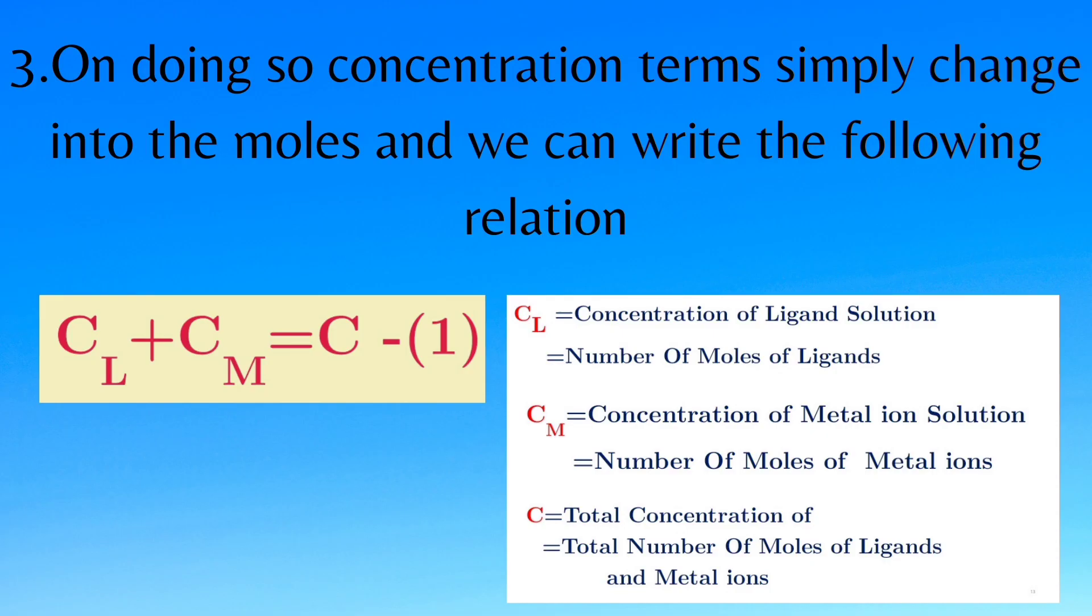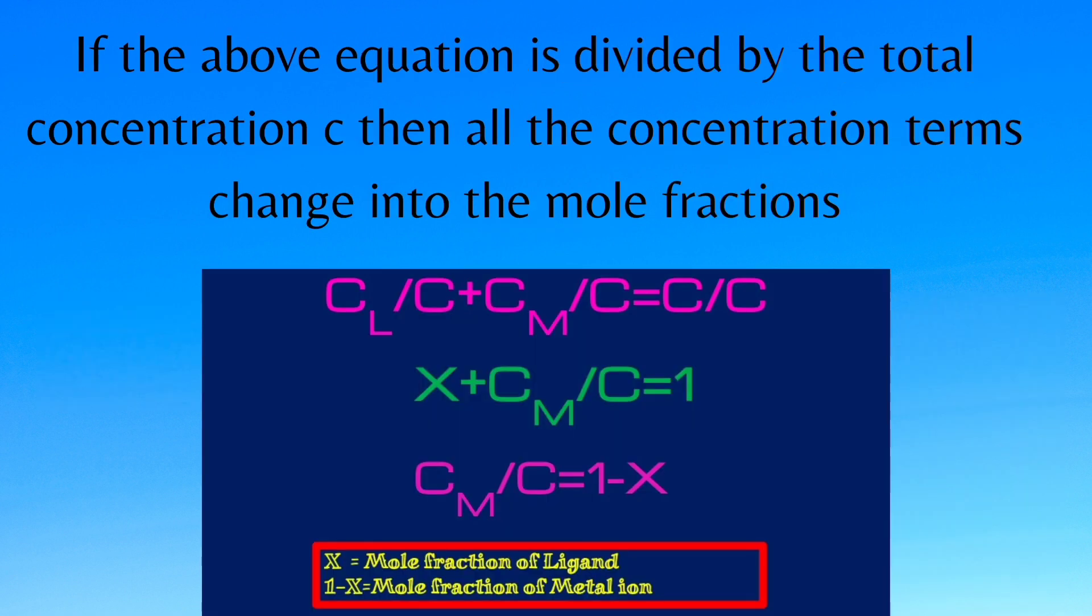On doing so, concentration terms simply change into number of moles and we can show the relation between concentrations of metal ion and ligand solutions by the equation Cl plus Cm equals C. Here Cl indicates the concentration, that means number of moles of ligand. Cm indicates the concentration, that means number of moles of metal ion, and C indicates the total concentration or total number of moles of metal ion and ligand.